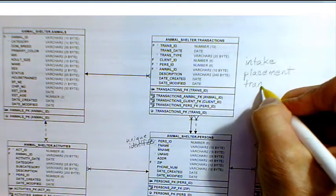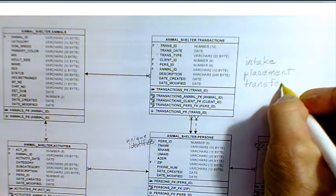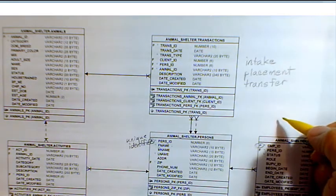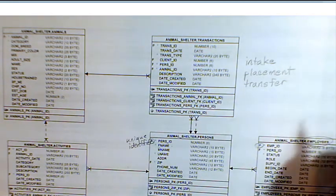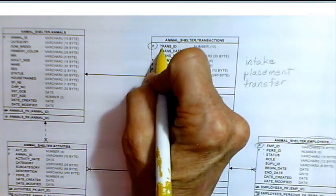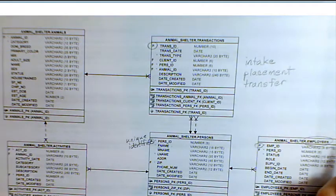We might also literally transfer to another facility, and there might be other types of transactions. We know which transaction we're dealing with because we have a primary key that uniquely identifies every transaction.